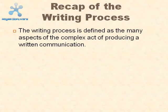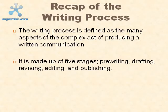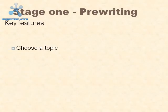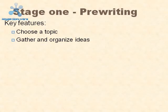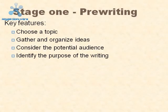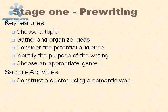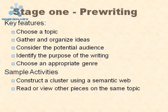Recap of the writing process. The writing process is defined as the many aspects of the complex act of producing a written communication, made up of five stages: pre-writing, drafting, revising, editing, and publishing. Stage one — pre-writing: key features are choose a topic, gather and organize ideas, consider the potential audience, identify the purpose of the writing, and choose an appropriate genre. Sample activities include constructing a cluster using a semantic web and reading or viewing other pieces on the same topic.